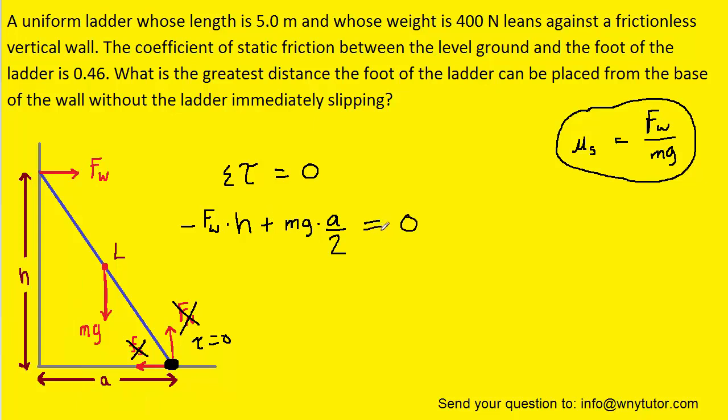And then we finish by setting that equal to 0. We're going to add Fwh over to the other side. And our goal right now is to try to solve this equation for the same ratio that we found earlier, Fw divided by mg. So we'll divide both sides by mg, and then divide both sides by h.